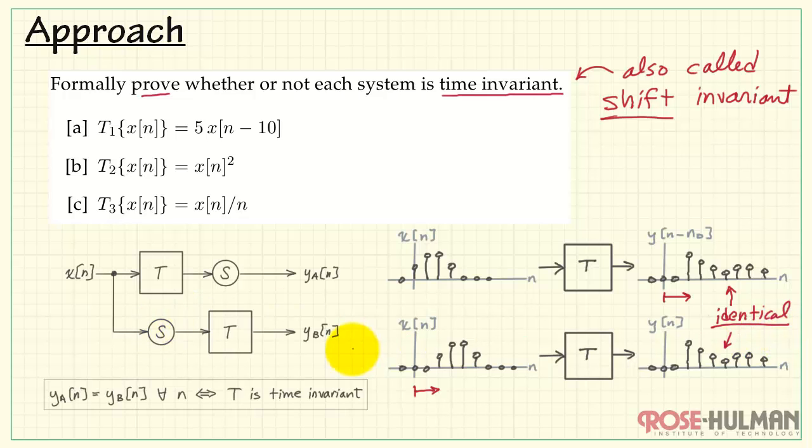Here's a proof structure to establish this case for system T. The top track represents the case of shifting the signal after processing. The bottom track represents the case of shifting before processing.